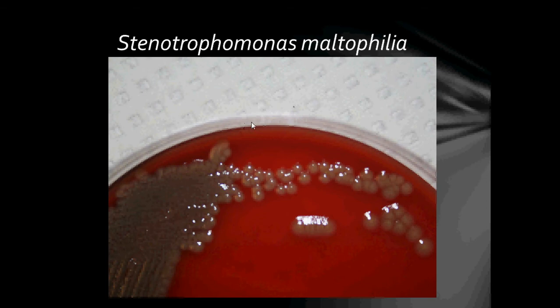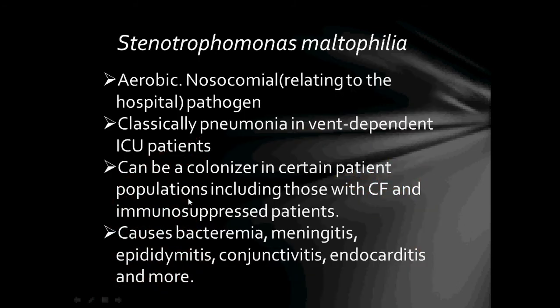Here we have colonies of Stenotrophomonas maltophilia growing on blood agar, and as you can see their colonies appear greyish in colour. Stenotrophomonas maltophilia are aerobic, nosocomial (hospital-acquired) pathogens that classically cause pneumonia in ventilator-dependent ICU patients, and can colonise patients with CF (Cystic Fibrosis) and immunosuppressed patients. Cystic Fibrosis is an autosomal recessive genetic disorder that affects the lungs, pancreas, liver, and intestines.